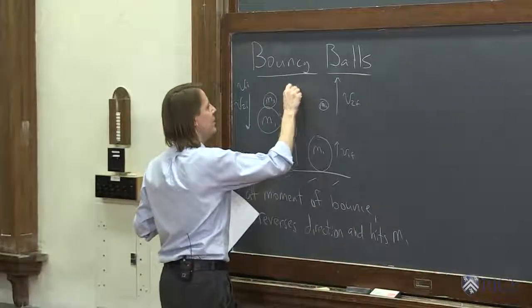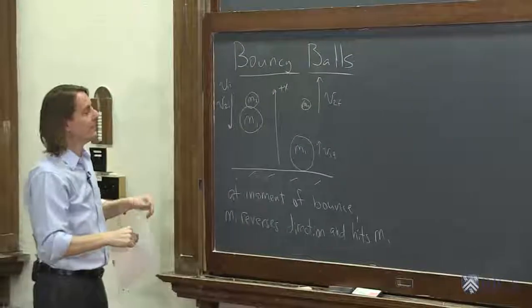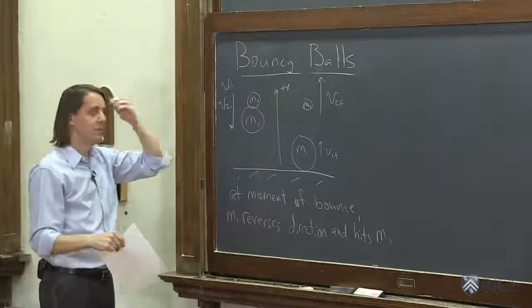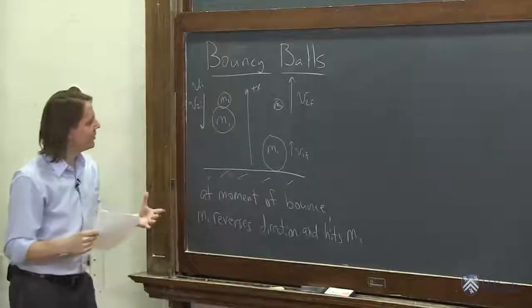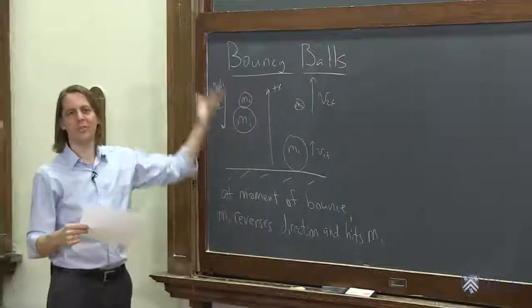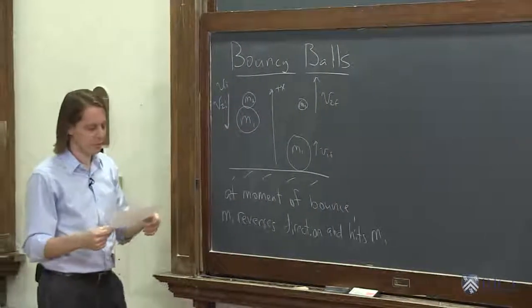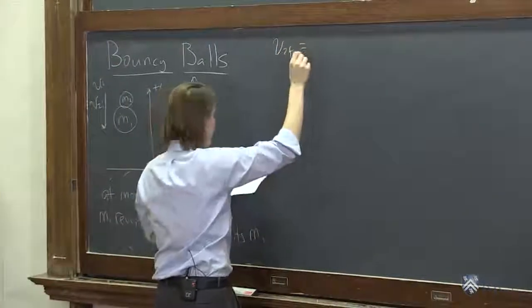We're going to analyze this. We're going to think about this as the positive direction. So plus x is up. Velocities up will be positive, velocities down will be negative. Our goal here is to say, how do you get the maximum height of V2f? How do you get it going as fast as possible? So you might say, I should write down V2f and analyze it.